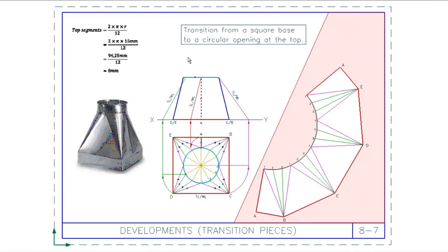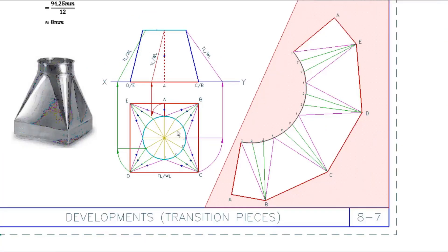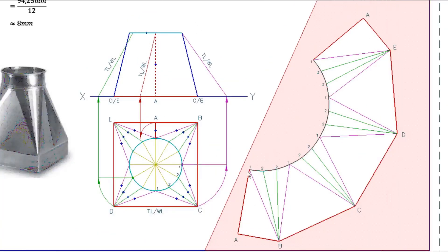To start the transition, take the cutting line true length and place it anywhere on the page, going more or less vertical — be careful not to tilt it too far sideways or you may run out of space. From that corner, go from A to B — that's already a true length, so set your compass to AB and swing from A. Then set the compass to the purple true length, put it on point 1, swing the compass, and where they meet you have point B. Connect it for the first triangle.